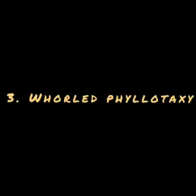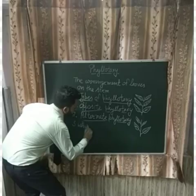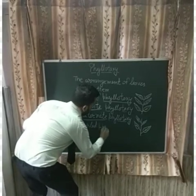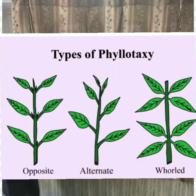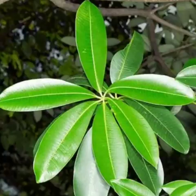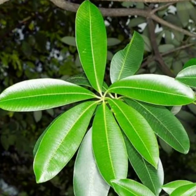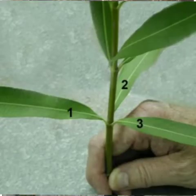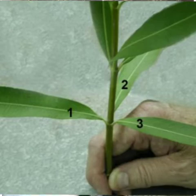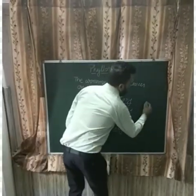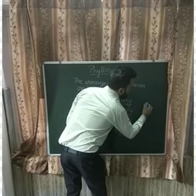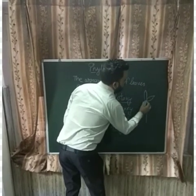The third type of Phyllotaxy is Whorled Phyllotaxy. In Whorled Phyllotaxy, when more than two leaves arise at each node arranged in a whorl or circle, it is called Whorled Phyllotaxy. You can see on the blackboard an example — this is a node, and more than two leaves arise from a single node.